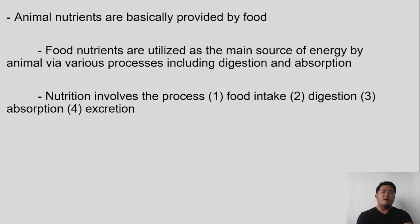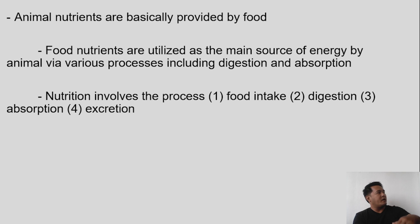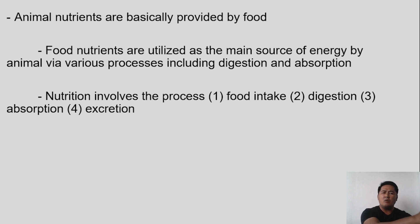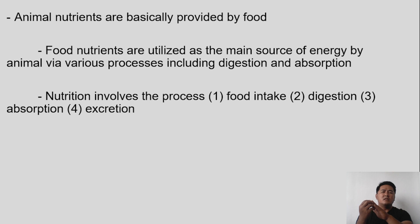Animal nutrients are basically provided by food. Nutrients cannot be given in any other way — whether you are giving them commercial feeds, mixed feeds, or your own formulated feeds. Food nutrients are utilized as the main source of energy by the animal via various processes including digestion and absorption. The food they eat is their source of energy, obtained through these different processes.